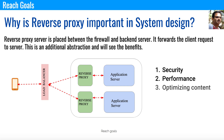The third use case is content optimization. Most content going from the client to the app server may require gzip compression. Instead of placing this in the app server, you can have it in the reverse proxy, so whatever content goes from the client to the server or from the server to the client can be gzip compressed as needed. This reduces bandwidth and helps improve the overall performance of the system.